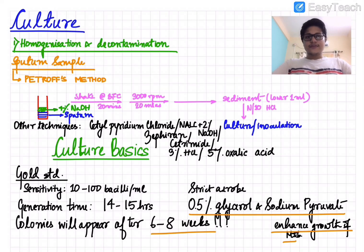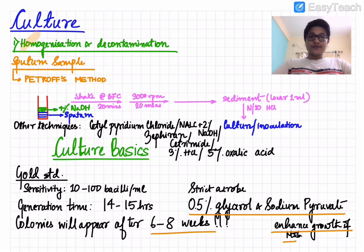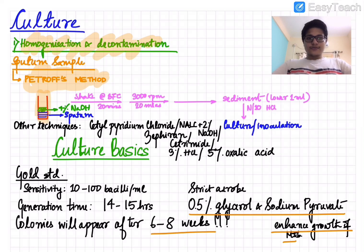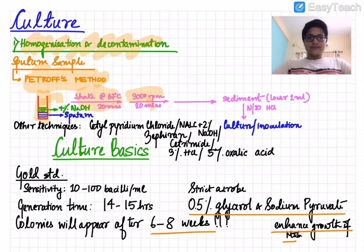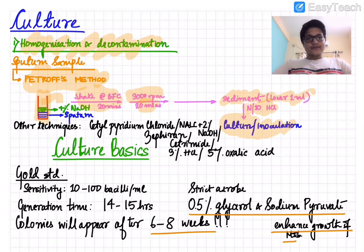Sputum culture is the most important diagnostic modality in tuberculosis. Before culturing, we must homogenize and decontaminate the sputum sample using Petroff's method: add 4% NaOH to the sample, shake for 20 minutes at 37°C, centrifuge at 3000 RPM for 20 minutes, then take the lower 1 ml sediment and add N/10 HCl. This final sample is then inoculated onto culture media.